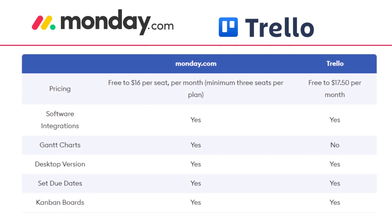Monday.com offers $16 per seat per month and the minimum per plan is three seats. Trello is $17.50 per month per user. Both have software integrations, but monday.com ups it by having Gantt charts. Both have desktop versions and allow you to set due dates and use Kanban boards.